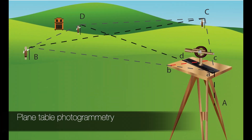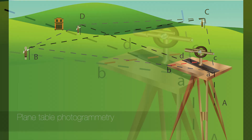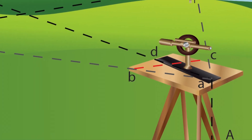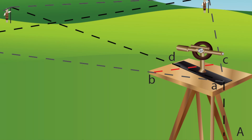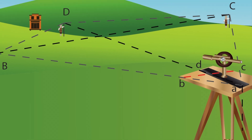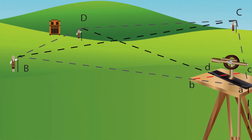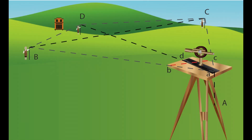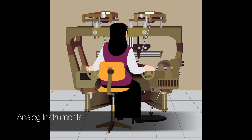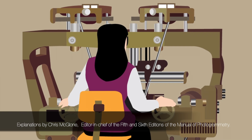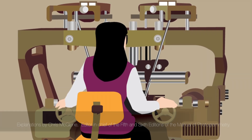Plain table photogrammetry: a plane table is a flat board on a tripod that holds a map. The operator sighted through a telescope on a protractor and recorded the distance and angles to various objects. A camera replaced the telescope, recording the angles to all objects in the scene. Photogrammetry at this point was done graphically, using plane table photographs or photographs taken from known positions and orientations. Analog instruments were then developed to perform intersection calculations by mechanically reproducing the geometry of the image.